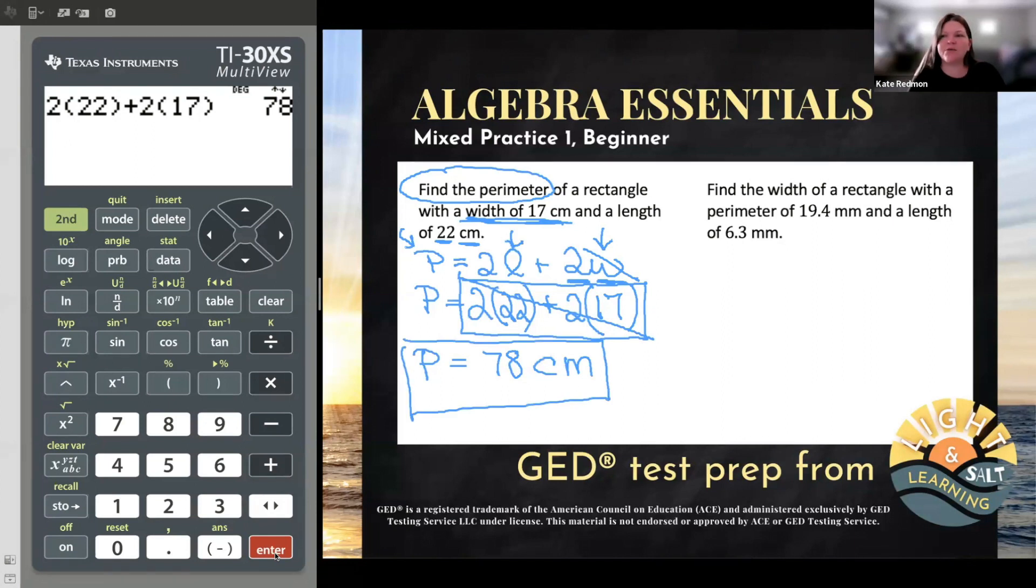Now you might say, why are we going to do another problem with perimeter of rectangle, Kate? That wasn't that hard. Well, this is the one that tricks a lot of beginning students. So watch carefully. It's similar, but it's not going to end up being the same kind of problem algebraically. Take a look at what I mean. This one says, find the width of a rectangle with a perimeter of 19.4 millimeters and a length of 6.3 millimeters.